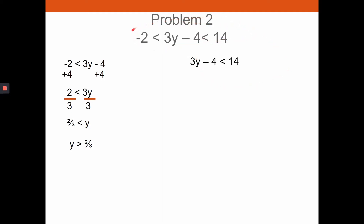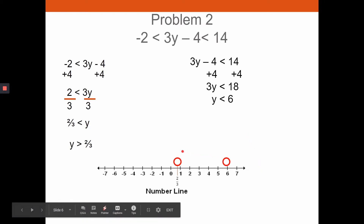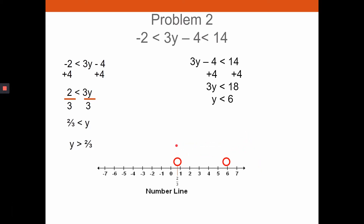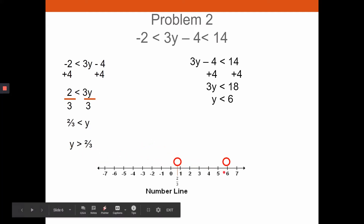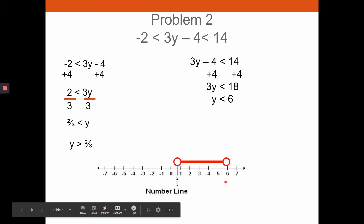For the second part — three y minus four less than fourteen — add four to both sides to get three y less than eighteen, then divide by three. No negative coefficient, so no flip. Result: y less than six. Since it's an AND statement, graph both above the number line, find the overlap, and shade between two-thirds and six.